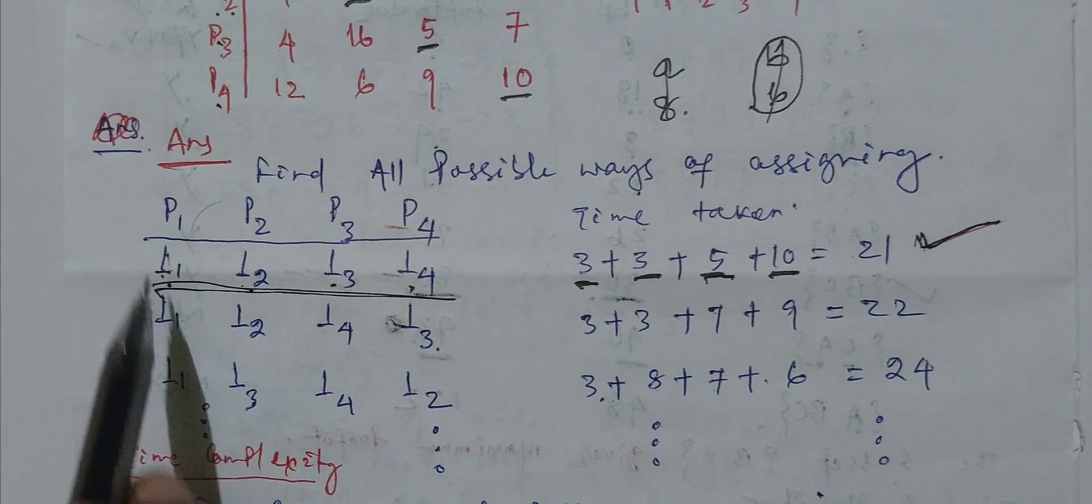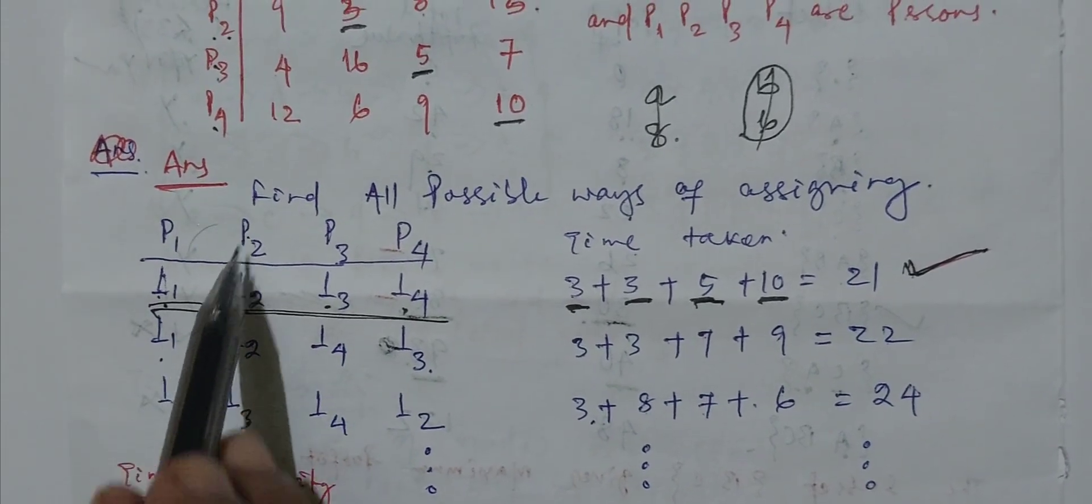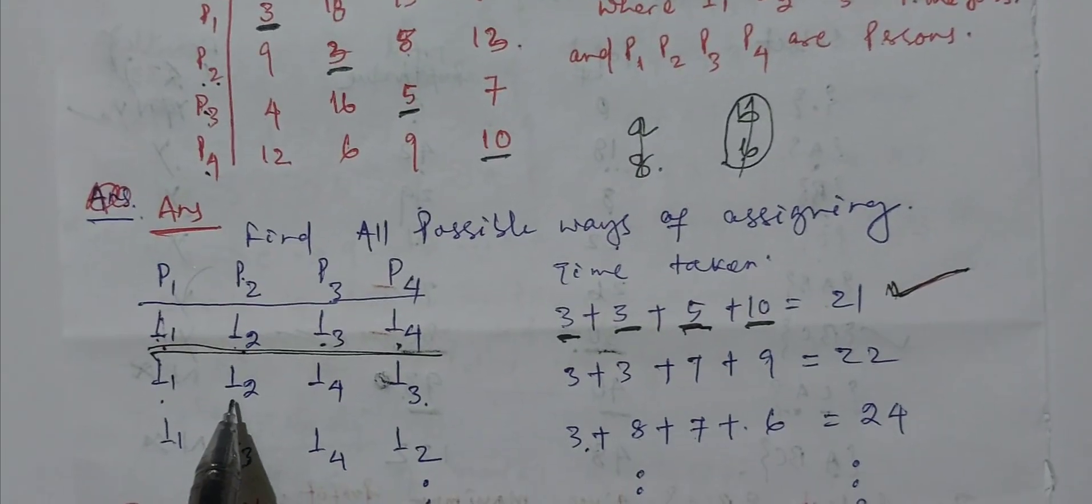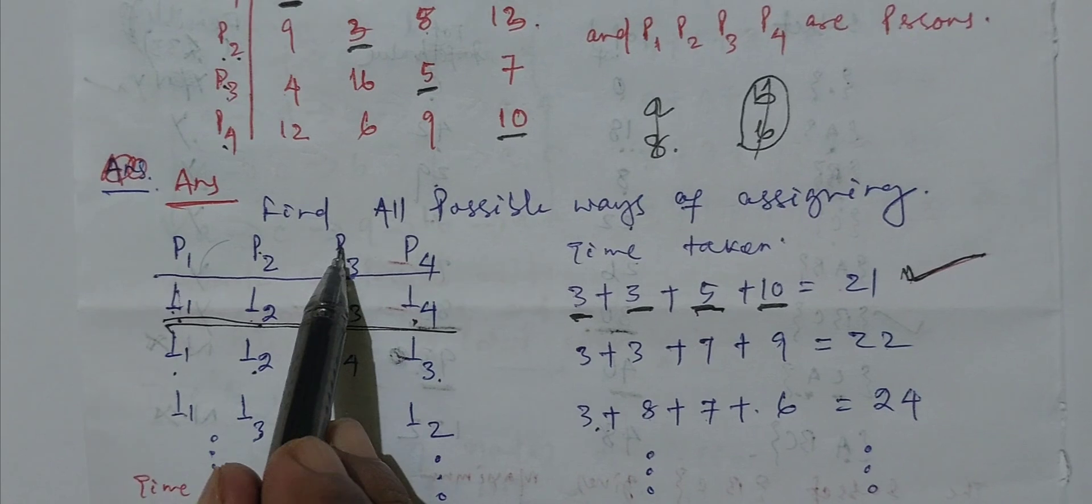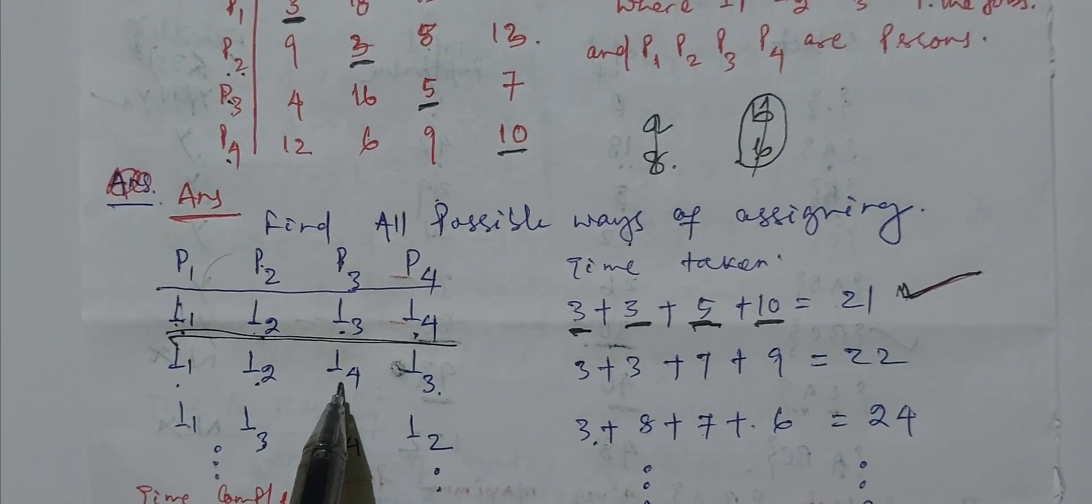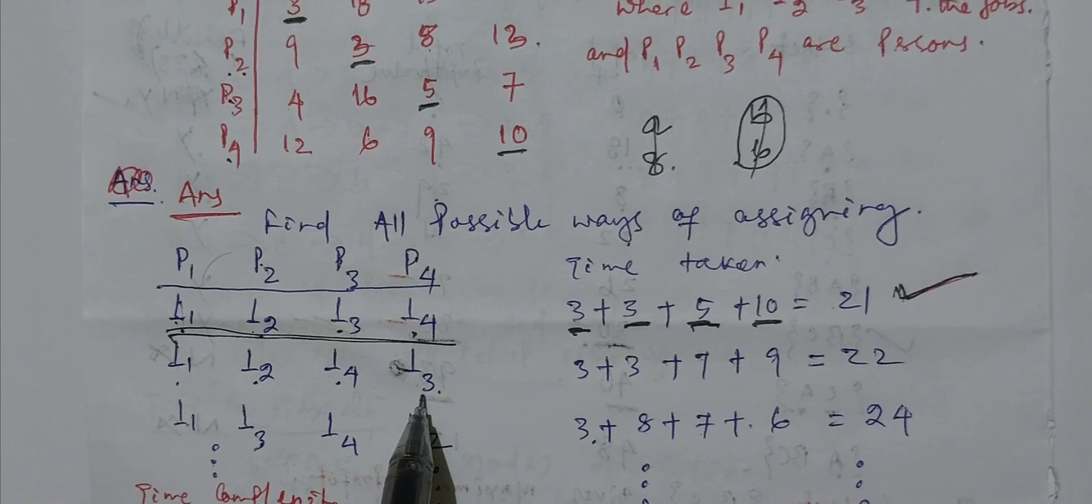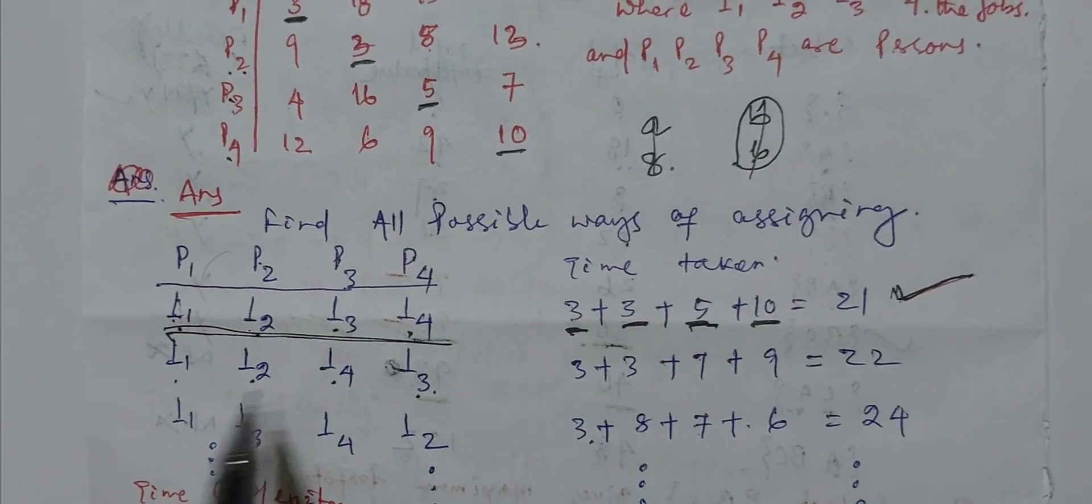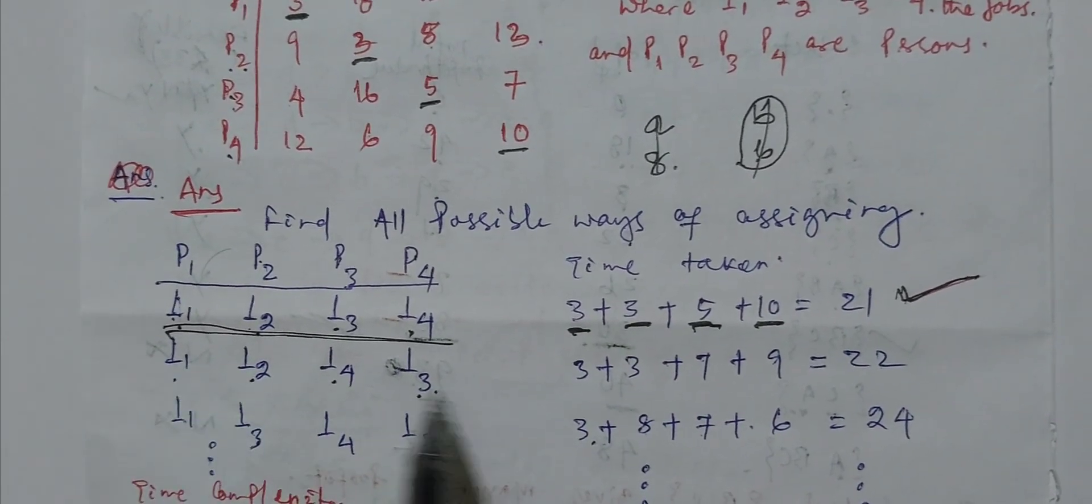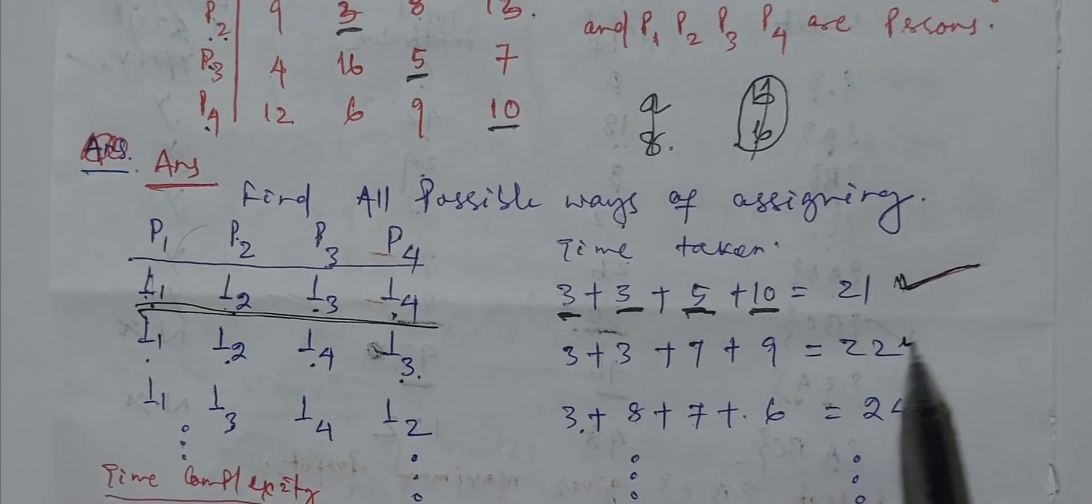Similarly, person 1 is given job 1, person 2 is assigned with job 2, person 3 is assigned with job 4, person 4 is assigned with job 3. So according to this principle, if we calculate 3 plus 3 plus 7 plus 9, this will be 22.